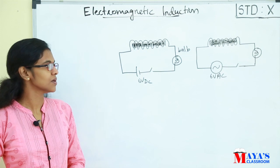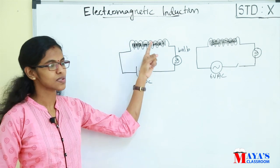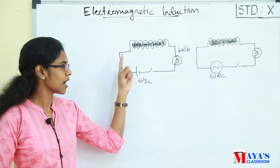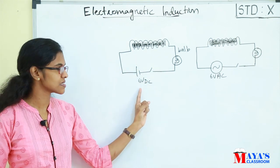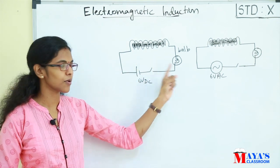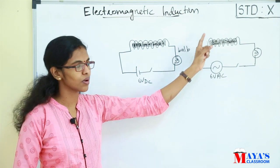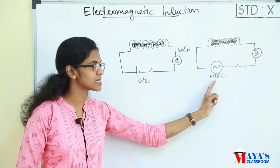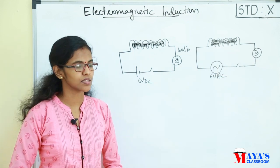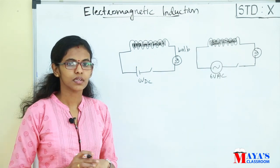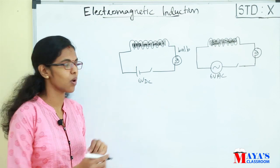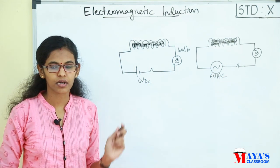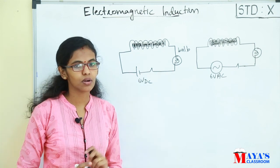We are going to study two circuits. We will show the soft iron core and two sensors. We have a 6 volt DC circuit and a 6 volt AC circuit. We are going to switch on the bulb, and in the second circuit the bulb will glow.